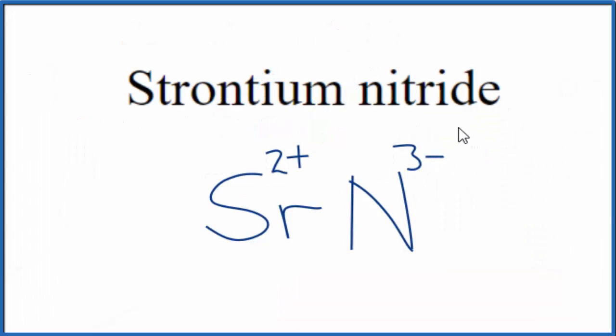Because strontium nitride is a neutral compound, you don't see the word ion after it, that means these charges need to balance. That's a little challenging when we have a 2-plus and a 3-minus. We can use the crisscross method to help us do this.